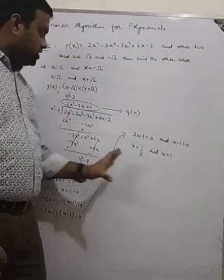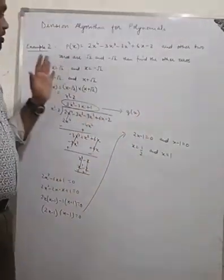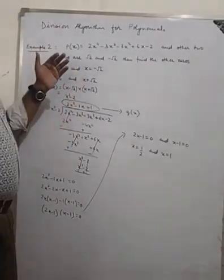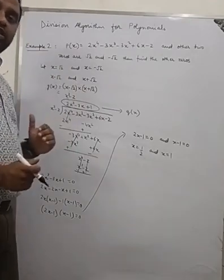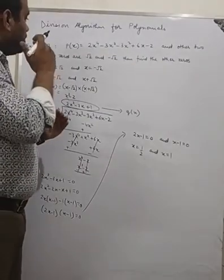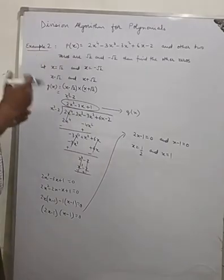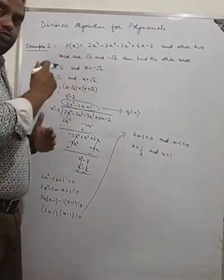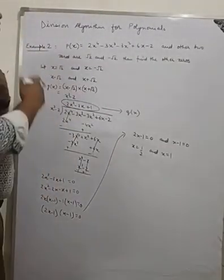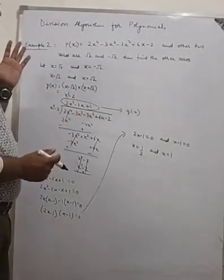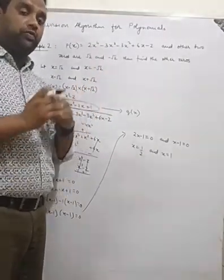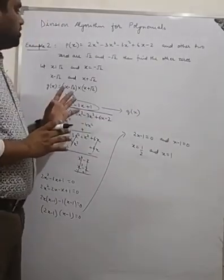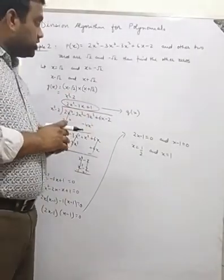The whole Exercise 2.3 of your NCERT Chapter 2 will be based on this division algorithm concept. In some questions you need to verify the division algorithm; in some you need to find the quotient and remainder; in some you need to find the other zeros. I hope you will be able to solve it with the help of my lecture. Thank you.